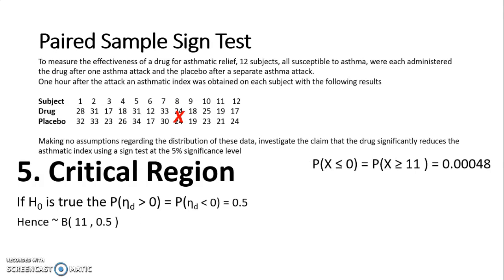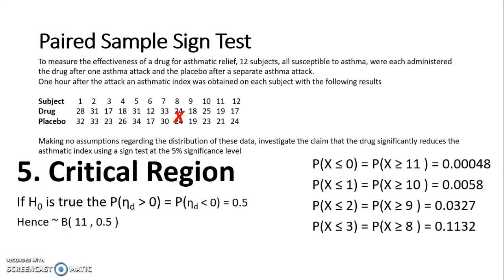So if I just use my calculator to get some probabilities using that binomial distribution, I can see that the probability of it being less than or equal to zero or greater than or equal to 11 is 0.00048 or 4.8×10^-4. And I can do that for the first few probabilities. I could do all of them, but I don't need to.